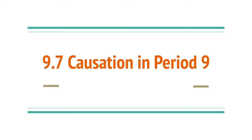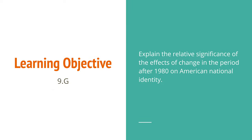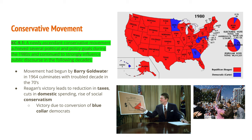Welcome back to lecture number 96, our last lecture covering historical topic 9.7 causation in period 9. We'll go over key concepts from the period and examine how the historical thinking skill of causation shows up. Our learning objective is to explain the relative significance of the effects of change in the period after 1980 on American national identity. We'll start with the conservative movement.